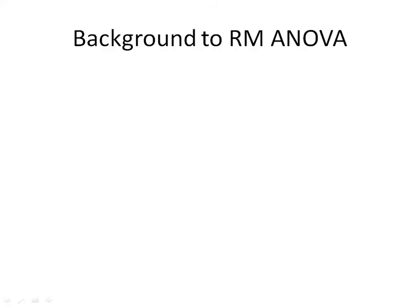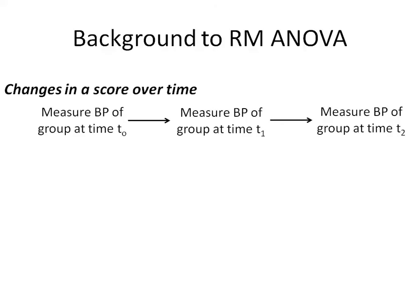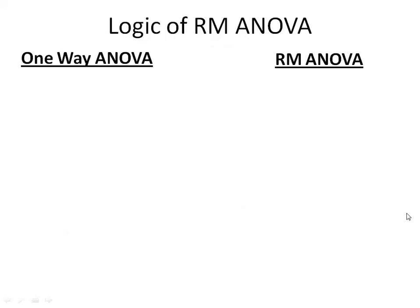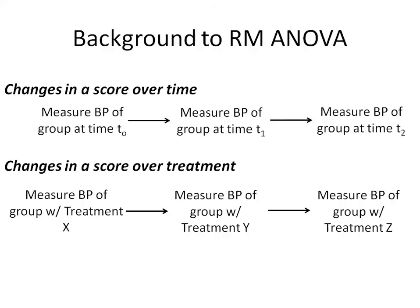To graphically represent this, repeated measures ANOVA can measure changes in score over time — as with blood clotting or blood pressure — measuring one group at T0, then T1 after taking the drug, and T2 as they continue. Or it can represent changes in score over differences in treatment, where one group gets treatment X, then the same group gets treatment Y, then treatment Z, and you look at differences in blood pressure. Basically, any time measurements are taken on the same subject over and over, you need to use a repeated measures ANOVA.